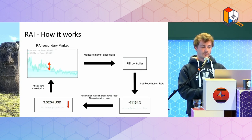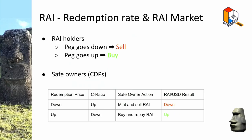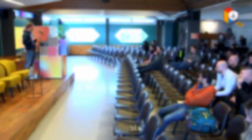The redemption price affects the RAI market in two ways. On the RAI holders' side: if the peg is going down — negative redemption rate — and you're holding RAI, you're losing value in dollar terms. So some holders will sell, pushing the price down. Inversely, if the rate is positive, your stablecoin is worth slightly more over time, so you might buy more to take advantage of that rate.